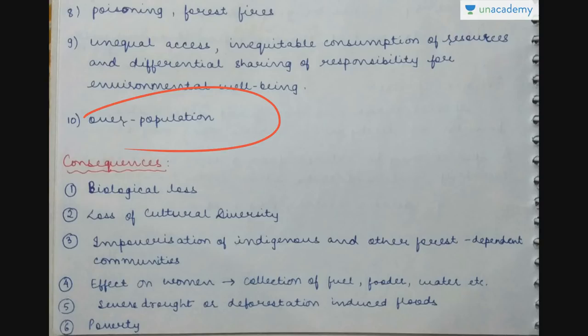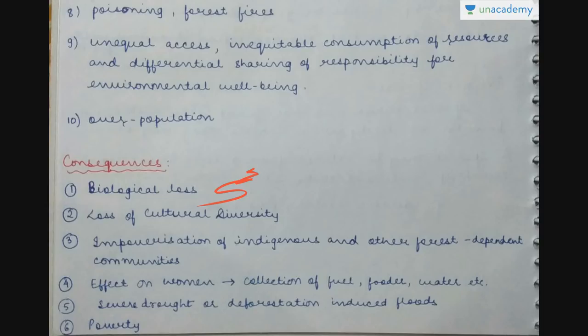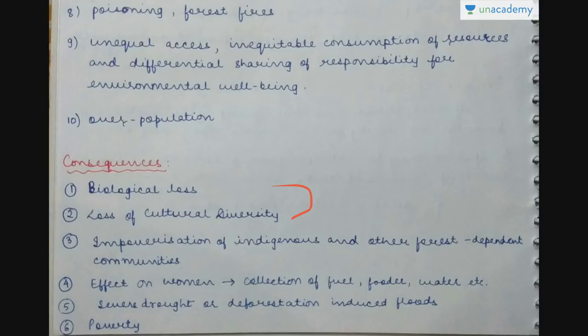Consequences of depletion: there is biological loss obviously when the number of species decreases. Because of that there is also loss of cultural diversity — especially for tribal or forest-dwelling populations. If we destroy their habitat, these people also have to migrate, resulting in loss of cultural diversity from a particular place. There is also impoverishment of indigenous and other forest-dependent communities.